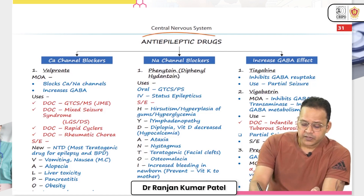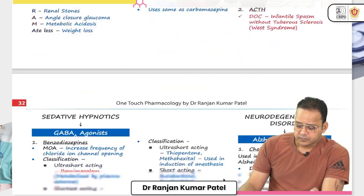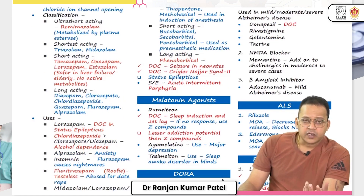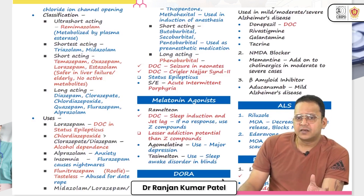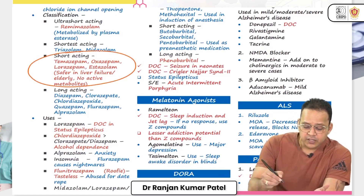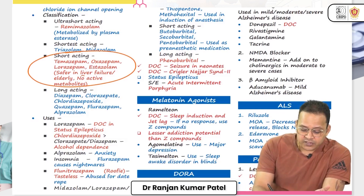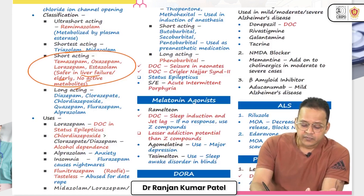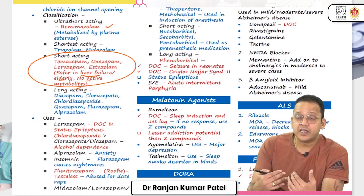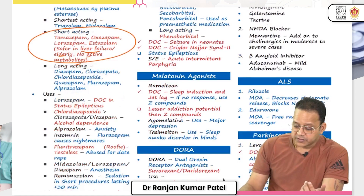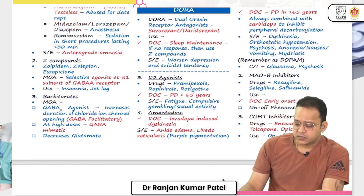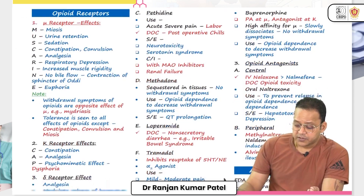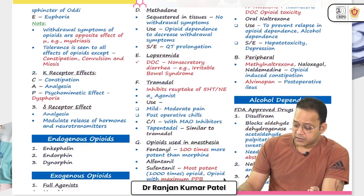For the central nervous system: anti-epileptic drugs in one page with all important content. Sedative-hypnotics and neurodegenerative disorders in one page. For sedative-hypnotics, you don't need to remember every benzodiazepine — just the short-acting ones. What they ask is which are safer in liver failure, in the elderly, or which have no active metabolites. Remimazolam is color-coded in red as the shortest-acting benzodiazepine with high probability of being asked. Opioids, alcohol, and smoking dependence are all in one page.